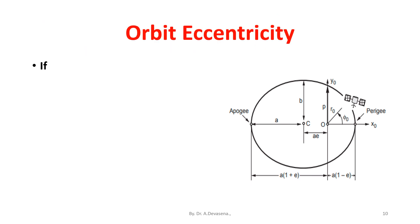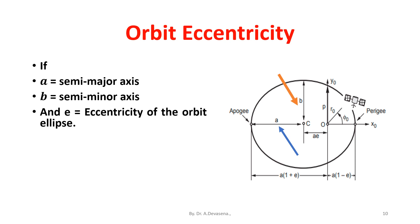Let us see the orbit eccentricity. For elliptical orbit, if A is the semi-major axis and B is the semi-minor axis, and e is the eccentricity of the orbit ellipse, is equal to A minus B divided by A plus B. For circular orbit, the value of A is equal to B is equal to 0, so the value of e is equal to 0 for circular orbit.